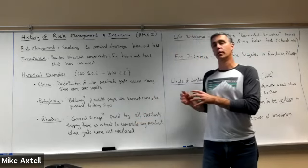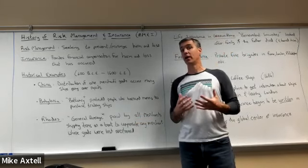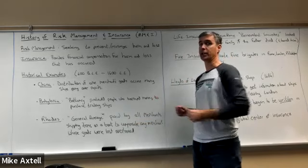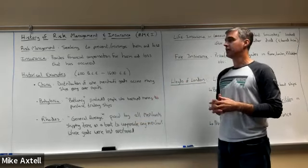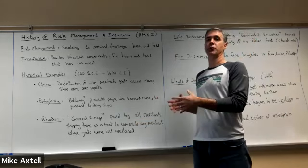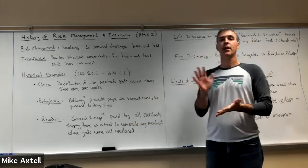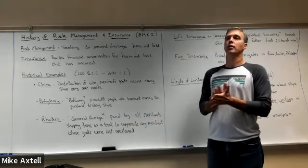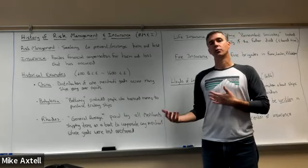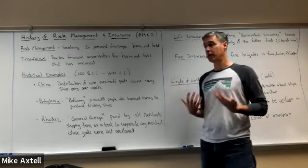Babylonia had this idea of bottomry, and it was actually in the Code of Hammurabi — one of the first written legal documents ever found. Bottomry meant that if you borrowed money to outfit a ship for a trading run and that ship went down, you were given some compensation or relief from the loan you would have to repay. This was meant to encourage trade, and indeed it did.